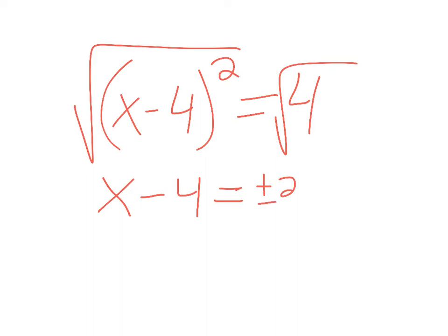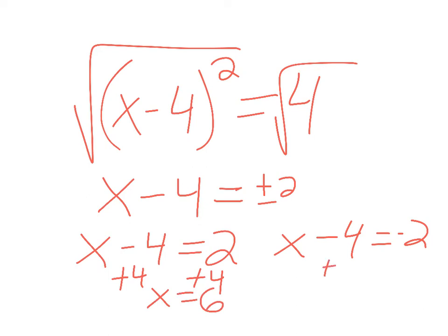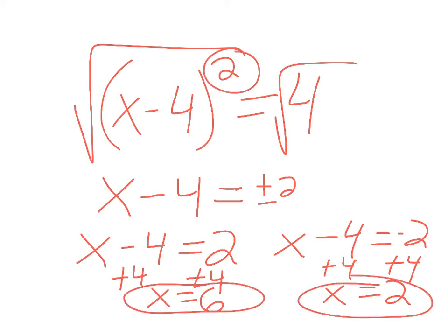So if I want to keep going, I'm going to say x minus 4 equals 2, x minus 4 equals negative 2. And I'm going to solve both of these equations. So I get 6, and I get 2. So because we now have squared, I'm looking for two possible solutions.